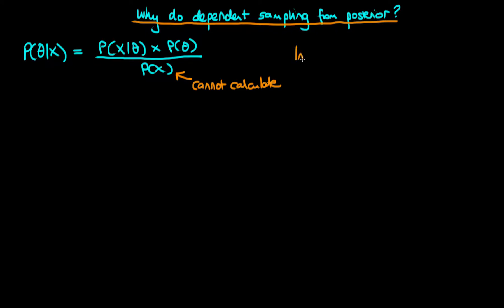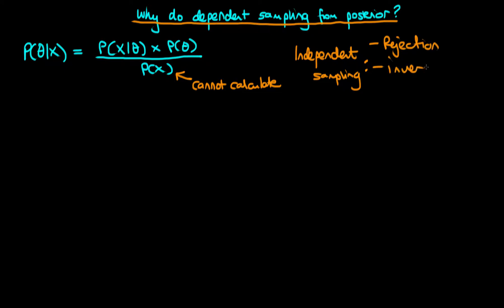We've thus far covered a type of sampling which is known as independent sampling. Independent sampling is defined as a sampling routine where the next value we draw from a given distribution does not depend on the current value that we have drawn. The techniques we've covered thus far to do this are: rejection sampling, inverse transform sampling, and importance sampling.